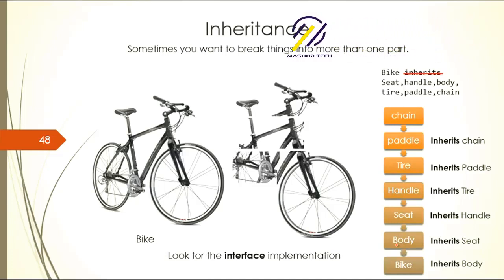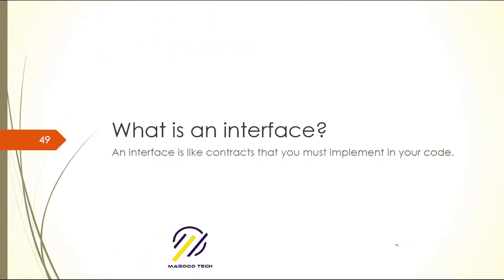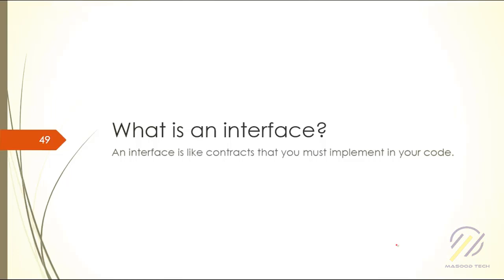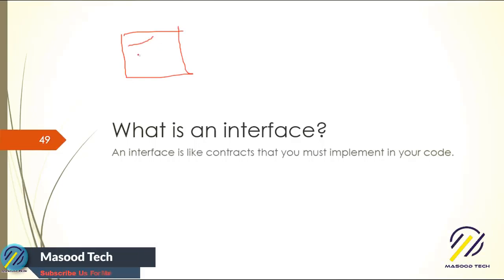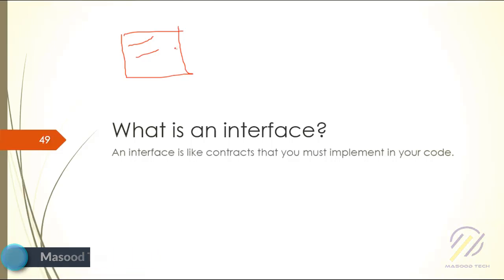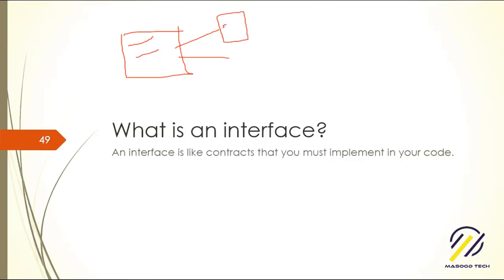So what can you do? Look for interfaces. Interfaces are the way to do the modular approach. An interface is like a contract that you must implement in your code. If you reference that interface in your class, then you have to implement those conditions in your class — that's it.